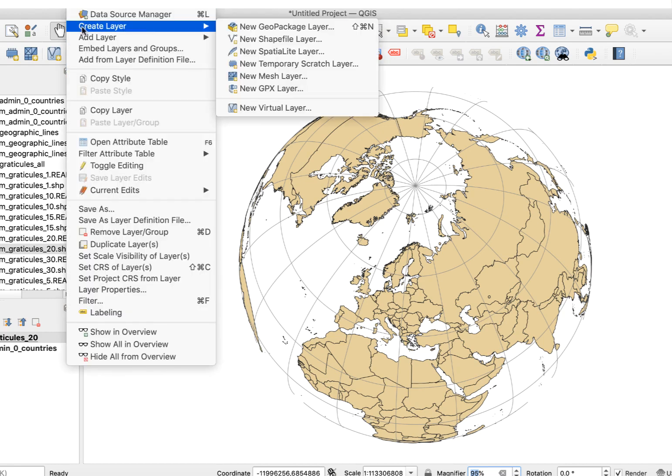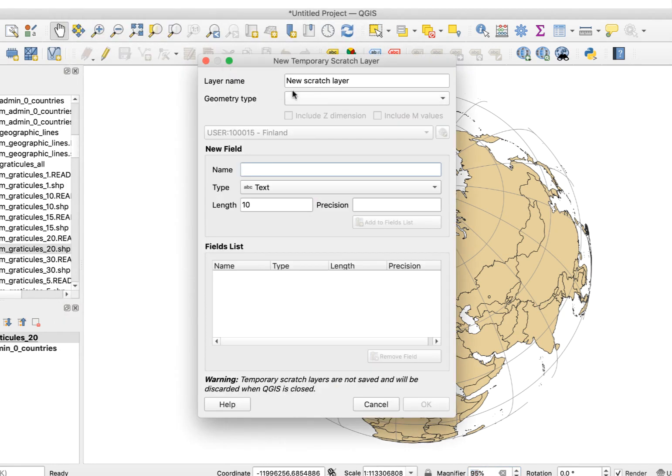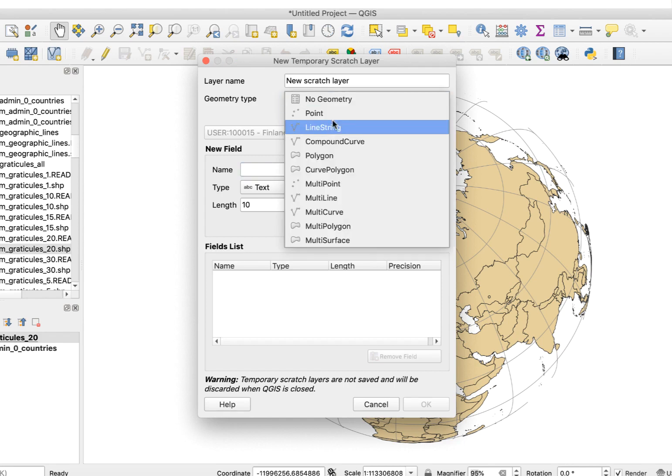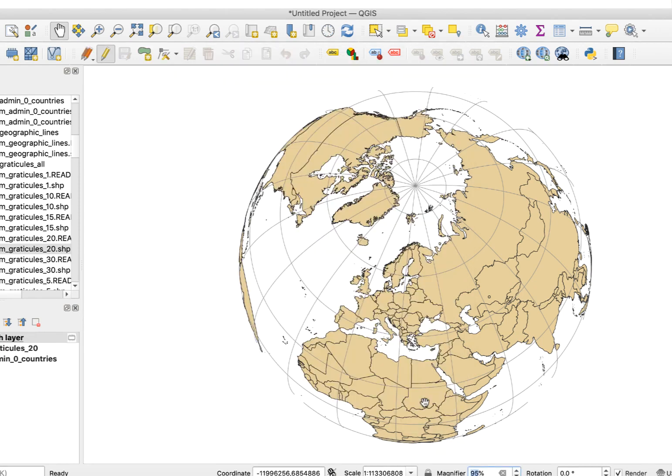First, we need to create a layer to hold our circle. Go to Layer Create Layer New Temporary Scratch Layer. I think older versions of QGIS call this a memory layer. When the new temporary scratch layer window appears, set the geometry type to polygon and click OK. Move this layer to the bottom in the layers panel.